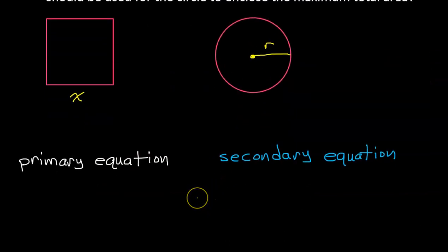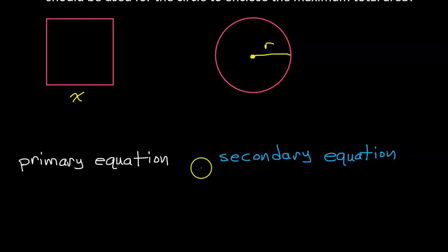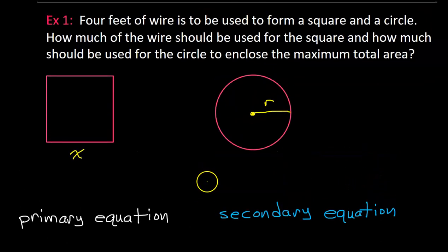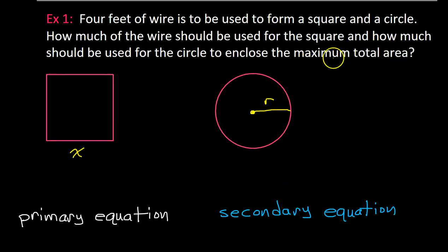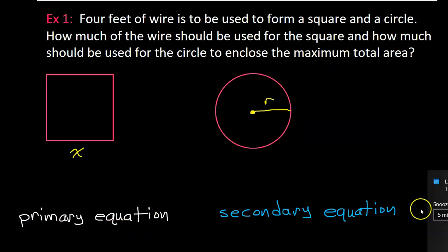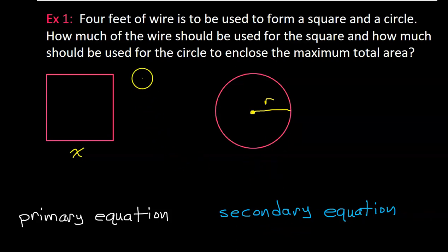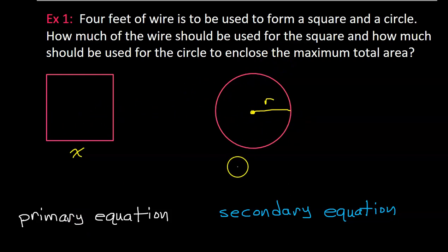When you are solving an optimization problem, you're going to have to set up a primary equation and a secondary equation. The primary equation is always going to represent whatever it is that you're trying to maximize — in this case, total area. The secondary equation will reflect some other condition that you're being forced to deal with. So let's start with the primary equation: we need an equation for the total area enclosed by both of these shapes.